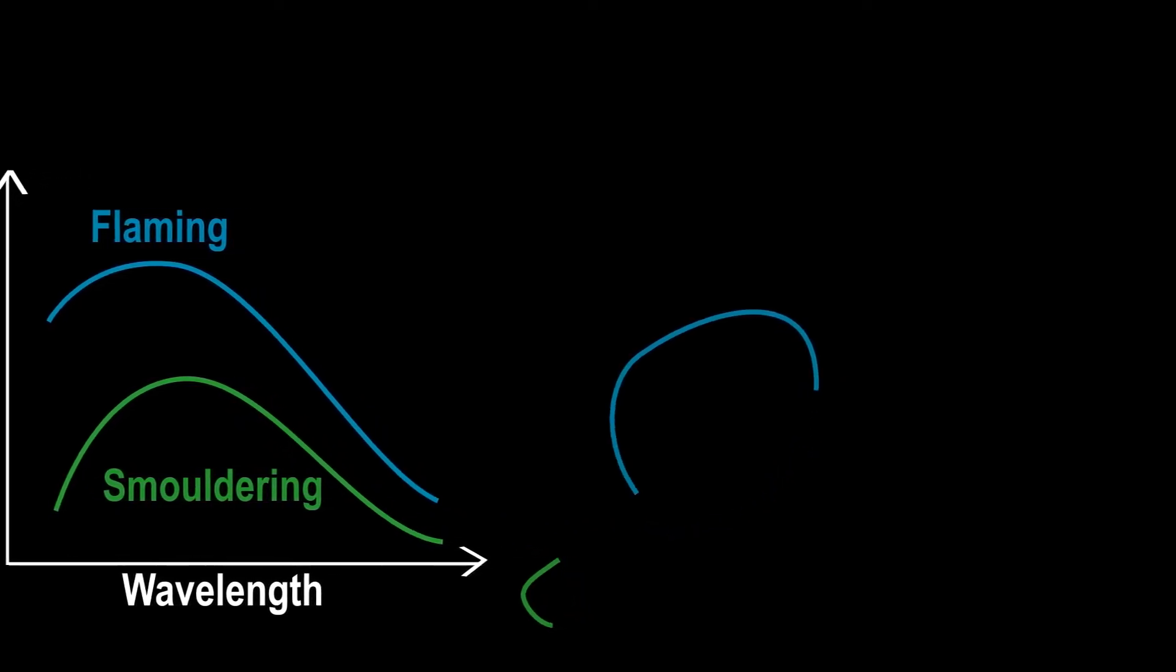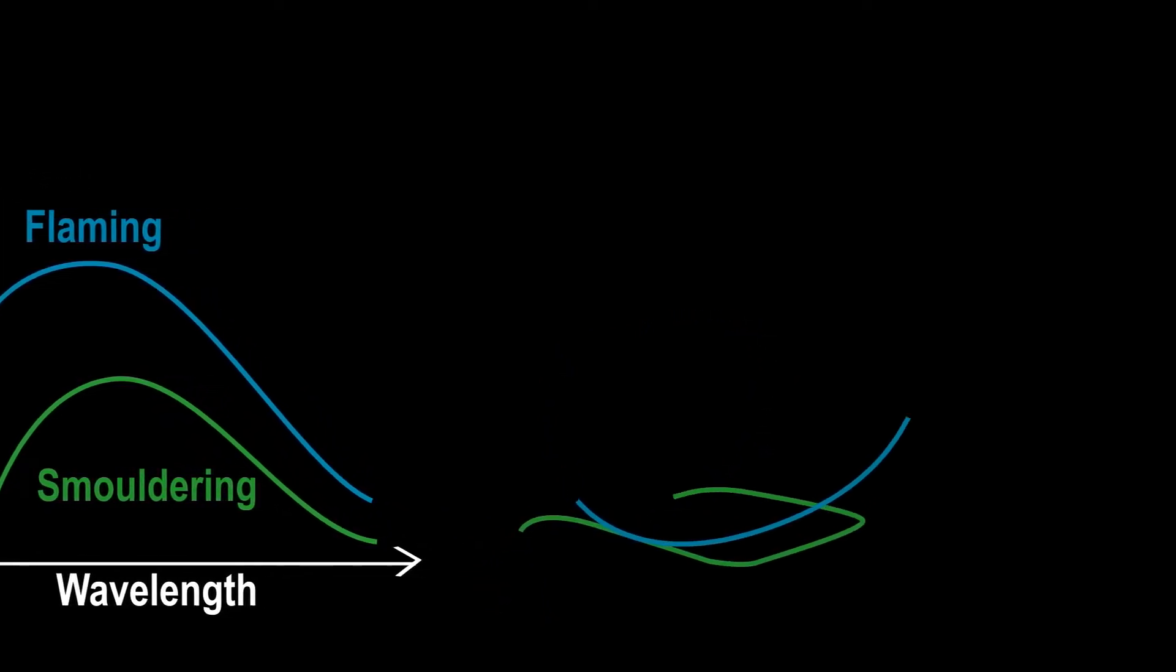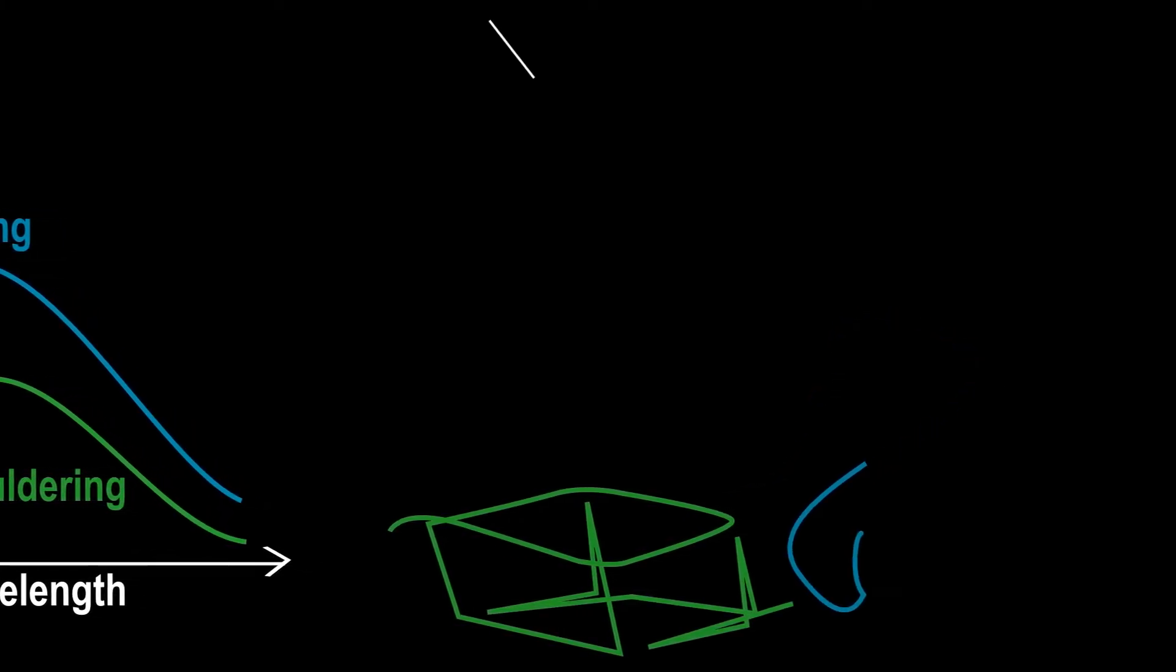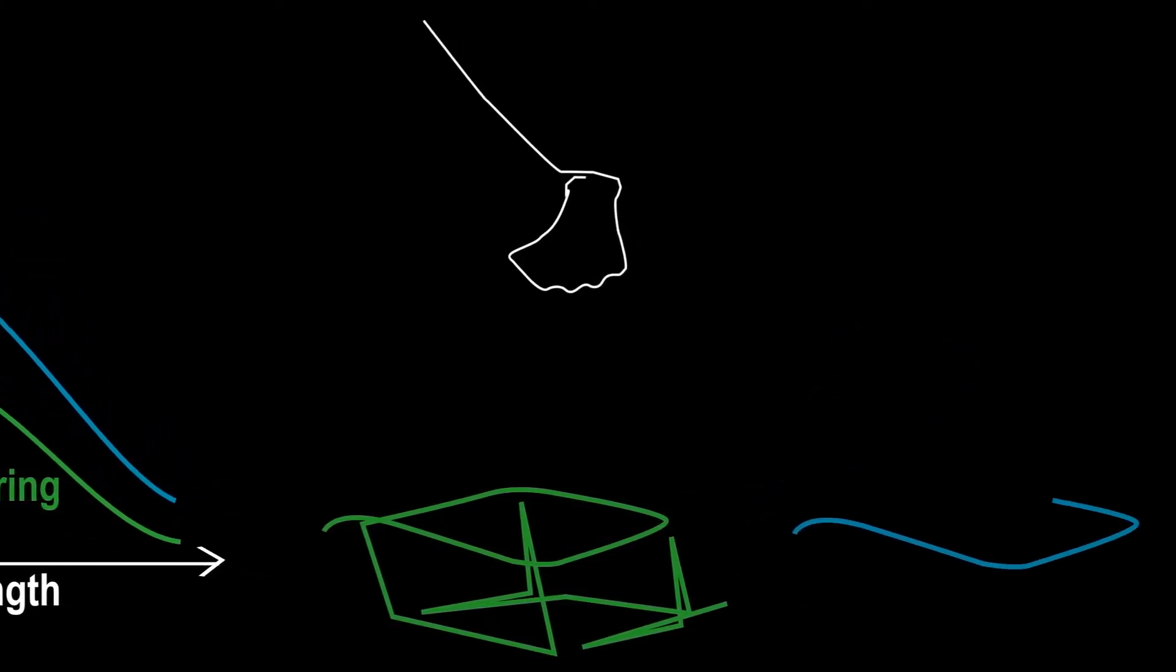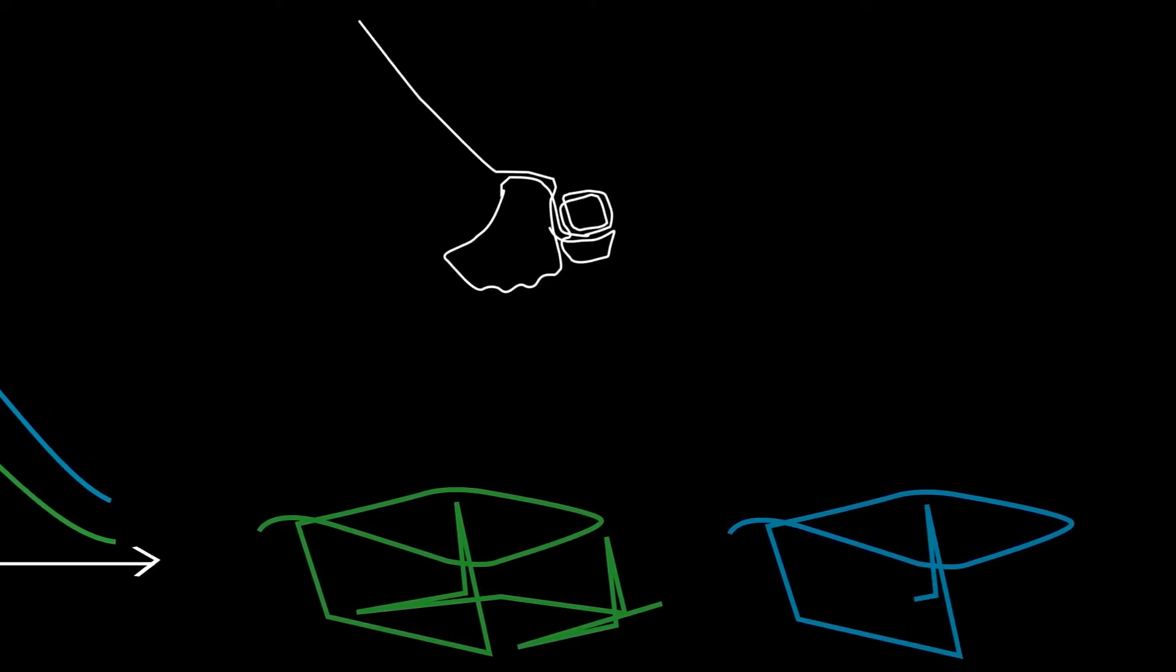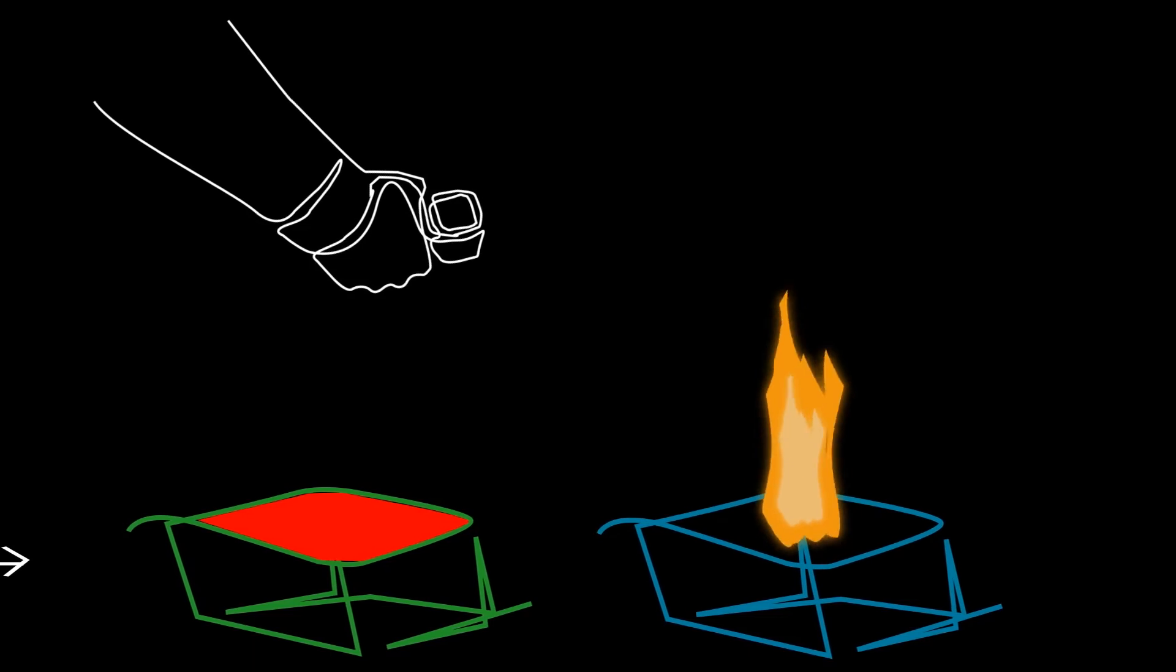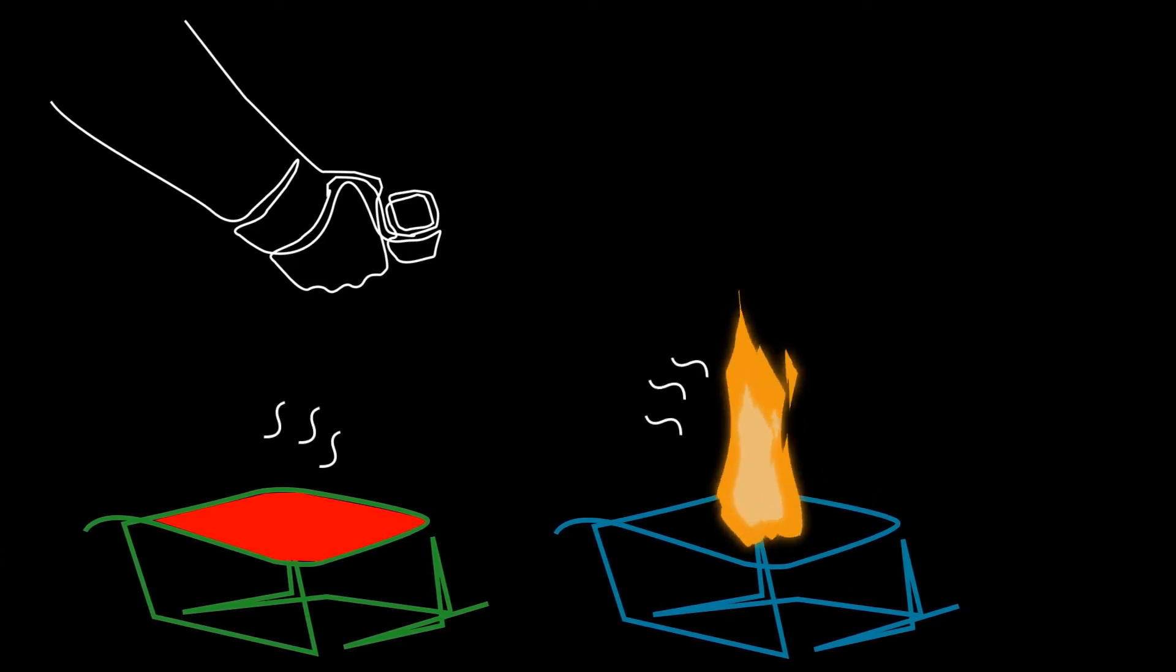At Imperial Haze Lab, we compare the infrared signals of smouldering and flaming fires in laboratory-controlled experiments. We found that radiation from flaming is 2 to 5 times stronger than smouldering at any wavelengths.